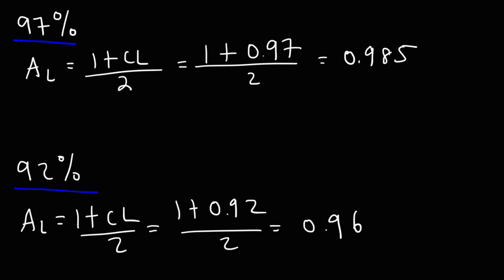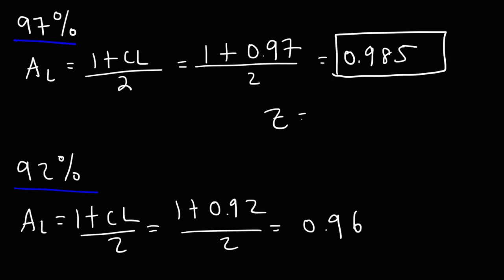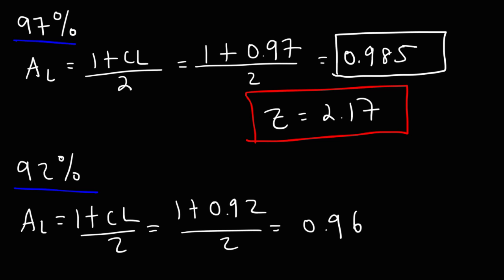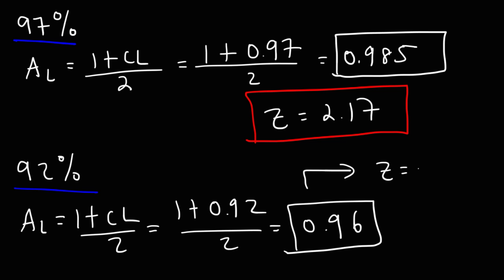Using the table we used earlier, locate an area of 0.985 — this should give you a z-value of 2.17, which is your answer for the 97% confidence level. Now, using an area of 0.96, this should give you a z-value of 1.75, which is the z-value that corresponds to a 92% confidence level. I'll show you that with the table shortly.